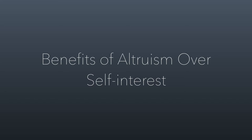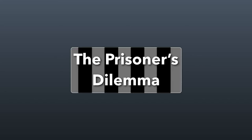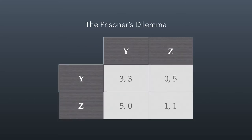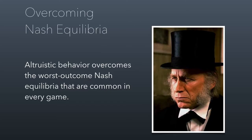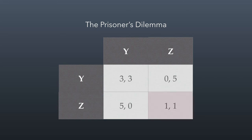Now I want to talk about the second part of this class session, which is why altruism is economically superior at times over self-interest. One of them will be illustrated in a game we're going to play together in class called the prisoner's dilemma. This is a traditional scoring table for the prisoner's dilemma game. What you'll learn in class is we're going to demonstrate why altruistic behavior overcomes the worst outcome Nash equilibria. I'm putting it in the recording here so you can have it as a refresher.